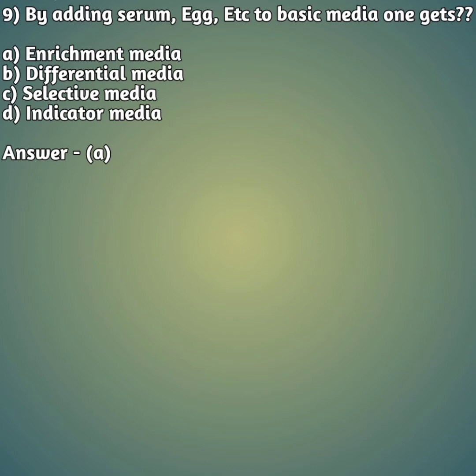Our ninth question: by adding serum, X, etc. to basic media, one gets — option A: enrichment media, option B: differential media, option C: selective media, option D: indicator media. The right answer is option A — by adding serum etc. to basic media, it is called enrichment media.